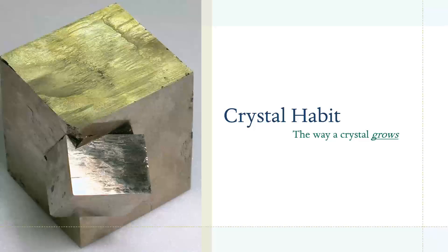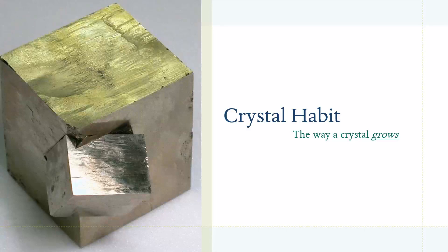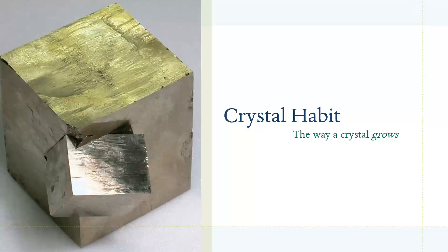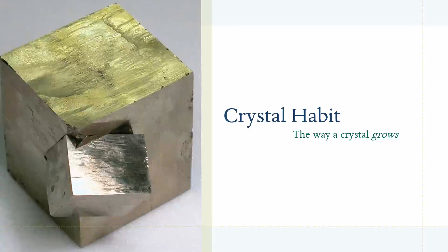First, let's discuss crystal habit. This is a fancy way to say the way a mineral grows. Some minerals grow in cubic shapes like pyrite, halite, galena, and lots of others. Other minerals form long crystals with points, or they form sheets or octahedra. There's just a lot of crystal habits out there.